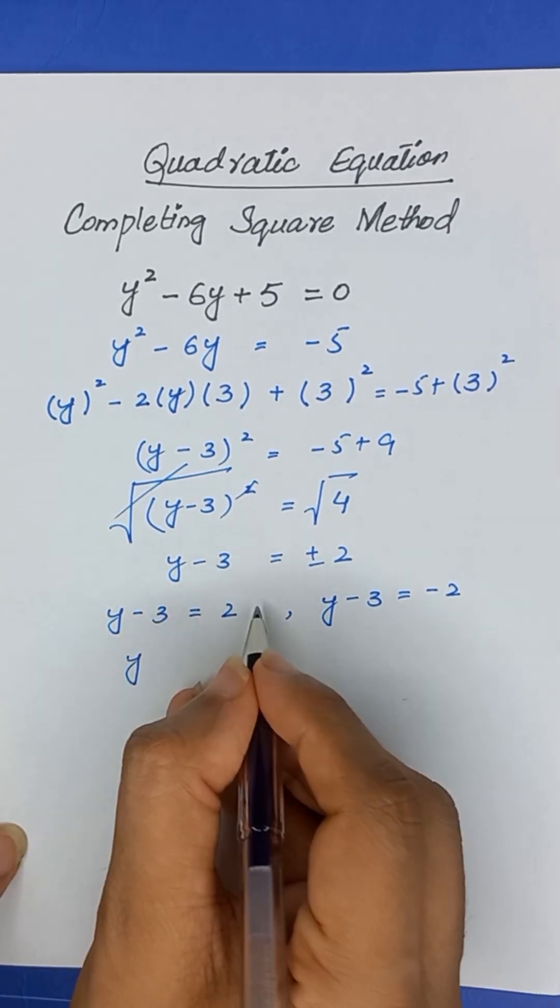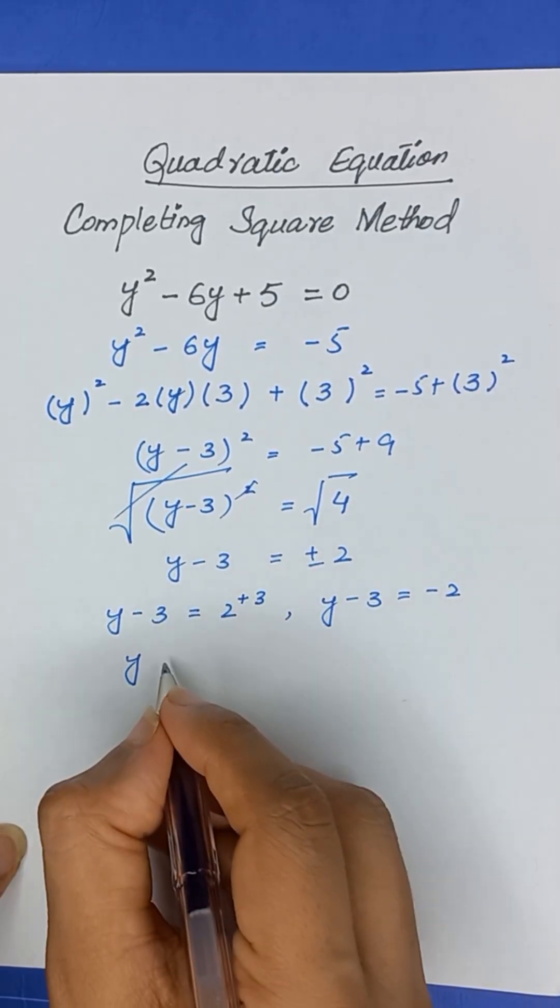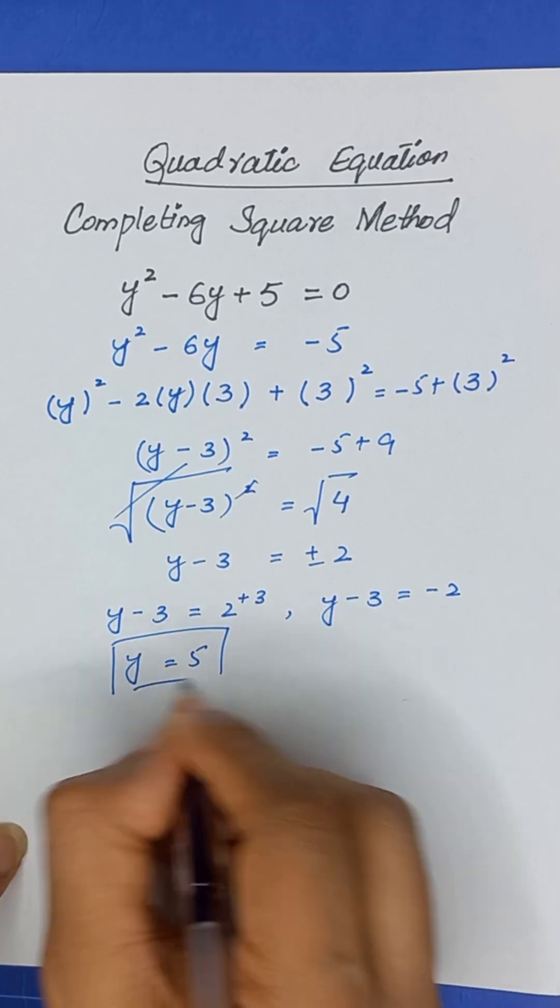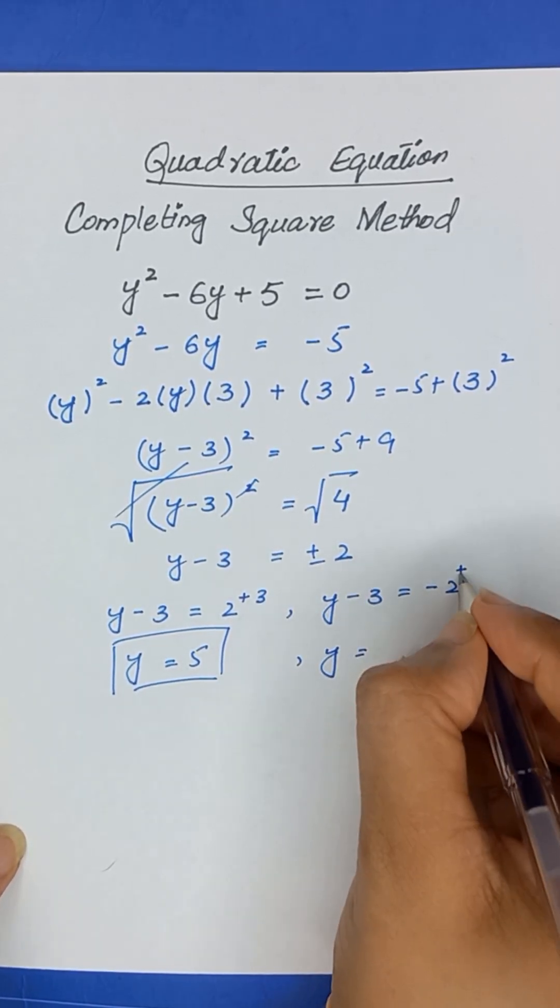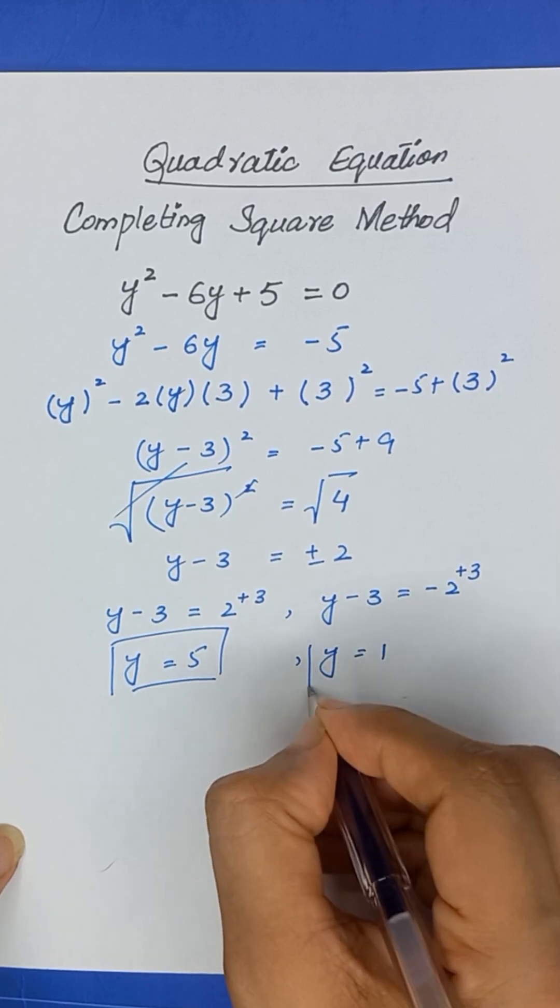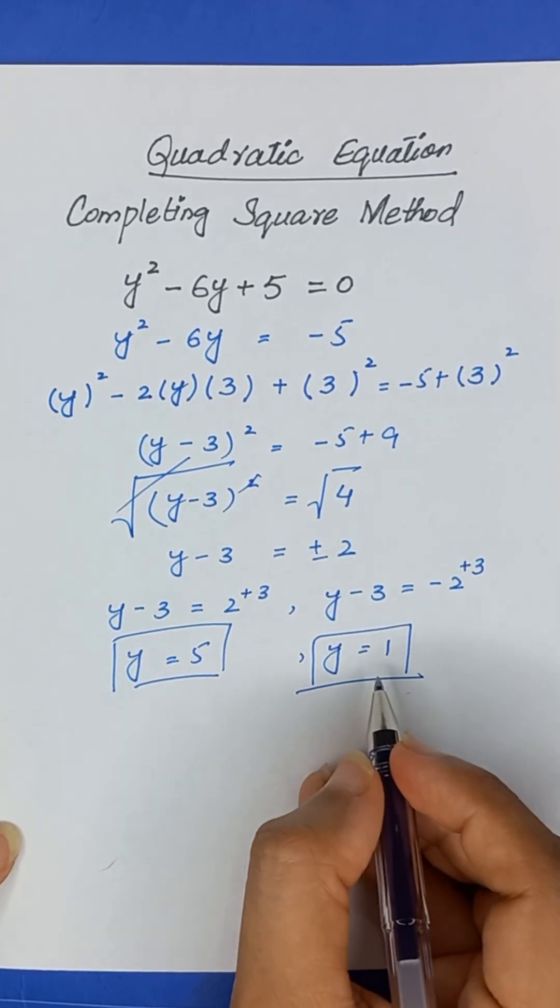When we will take this negative 3 to the right hand side, it will become plus 3. So, the value of y will be 5 and when we will take this negative 3 to the right hand side, it will be plus 3. So, the value of y in this case will be equal to 1. So, these are two possible values of y.